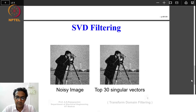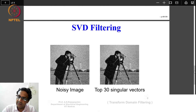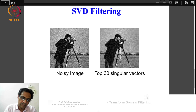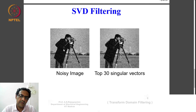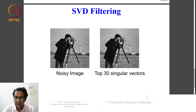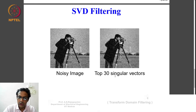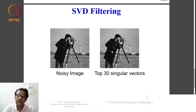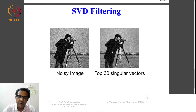You can also do SVD-based filtering of noise. Here is the standard cameraman image that has been affected by added noise. Transform domain filtering does not have to be always Fourier-based — you can also do SVD filtering. You take only a few singular vectors — in this case the top 30 singular vectors — to reconstruct the image. You can see it has been able to mitigate the level of noise a little bit, though the result is not great. But it helps to know that SVD, which we used earlier for other applications, also finds application in filtering noise.